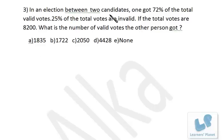In an election between two candidates, one got 72% of the total valid votes. 25% of the total votes were invalid. If the total votes are 8200, what is the number of valid votes that the other person got?